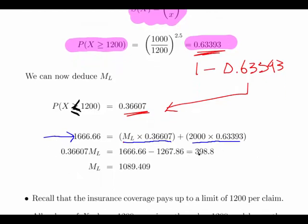Using the process of deduction and multiplication, we can work out that this ML value, which is the mean of the lower interval, is 1089.409. For all claims between 1000 and 1200, the mean is 1089.409.